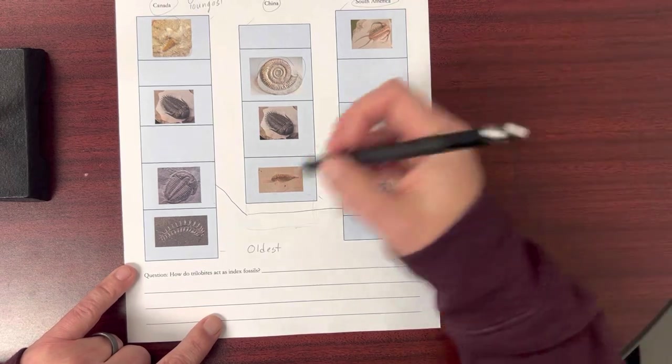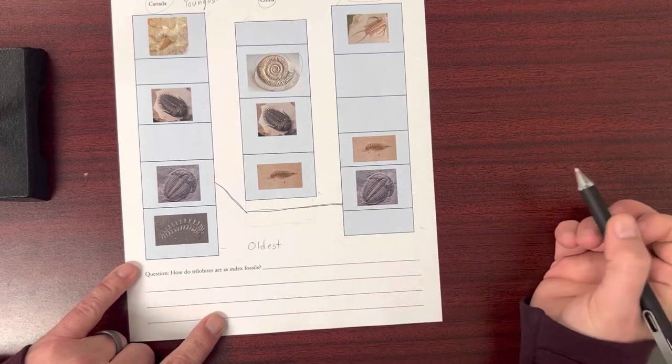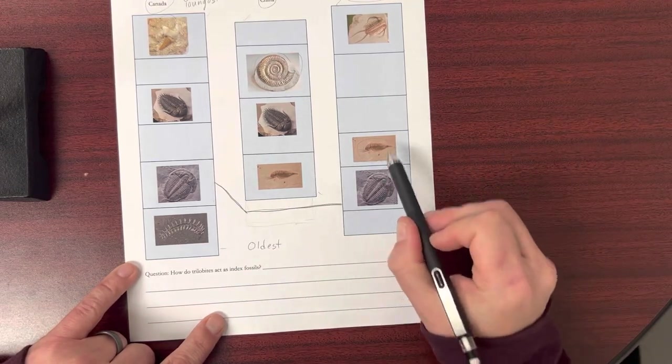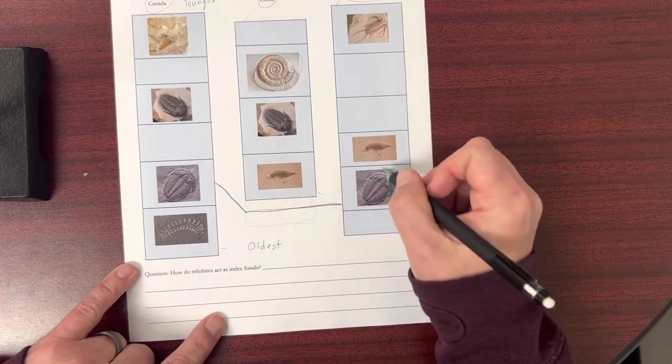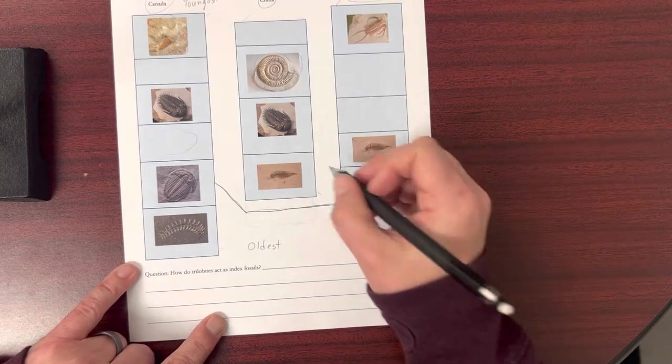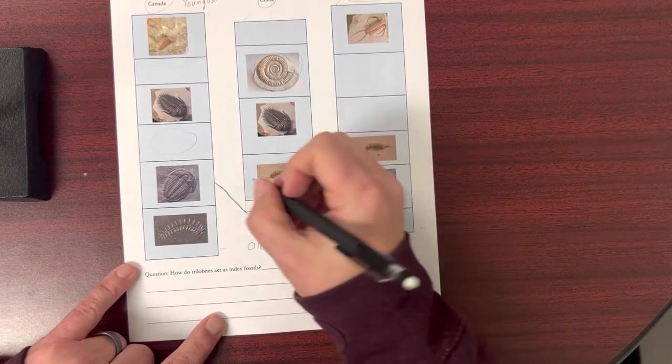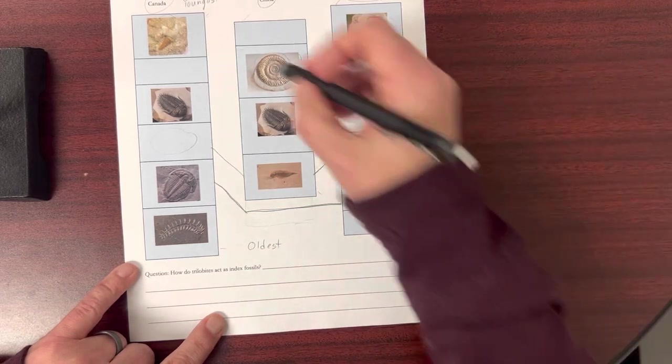If you have questions, let me know. But again, you're just connecting these. If you see another one, like these two seem to match up, and you know that that fossil was found in a younger rock layer than the trilobite, you're going to connect those ones.